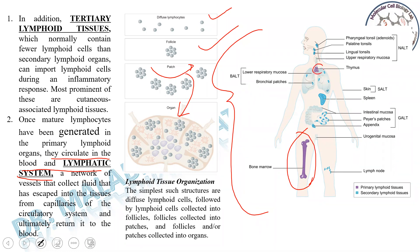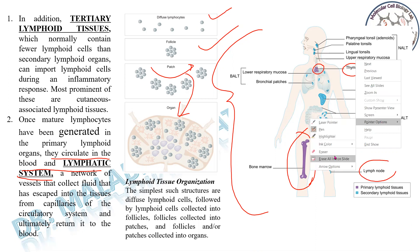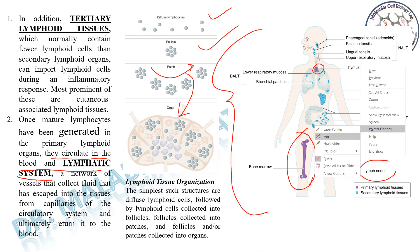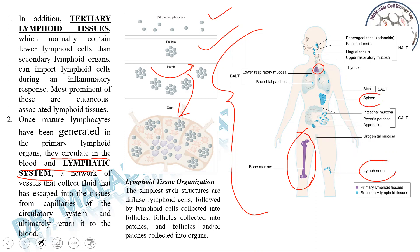This is a schematic representation of the various primary and secondary lymphoid organs as present in our body. The major primary lymphoid organs are the bone marrow and the thymus. The main two organized secondary lymphoid organs are the lymph nodes and the spleen. The remaining lymphoid tissue is the mucosal-associated lymphoid tissue, associated with the mucus lining of our body.